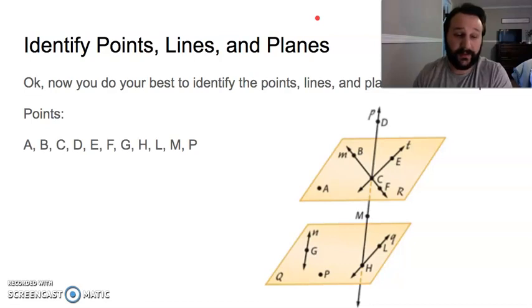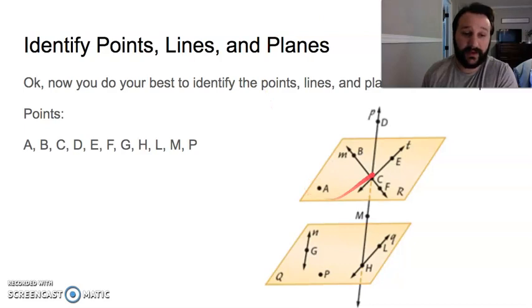We've got A, B, C, D. So I'll kind of go with them. A, B, C, point D is up here, E, F, just kind of following the alphabet here, G, H. There's no point I because capital I can be mistaken for lowercase l, so they just skip I. You got point L, M, and point P over here.